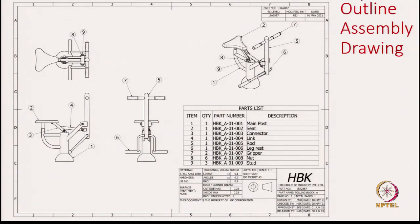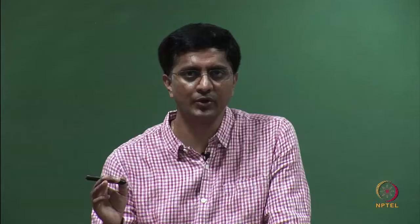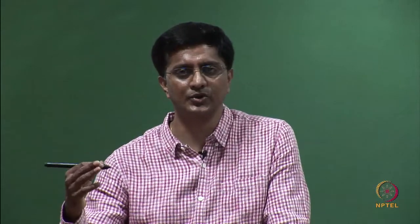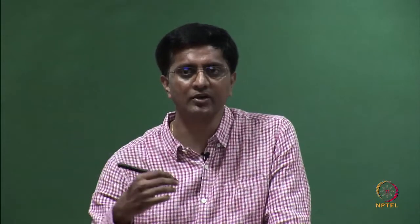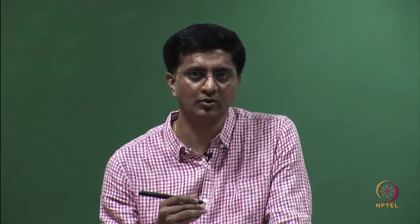Here is an example of an outline assembly drawn for the outdoor gym we saw earlier. There is a lot of information in this one single drawing. You can see the multi-views of the assembly as well as the pictorial or isometric view of the assembly. The pictorial helps you get a quick idea of the design, whereas the multi-views help to give more precise information about each individual component.